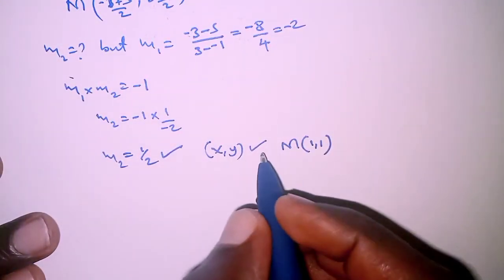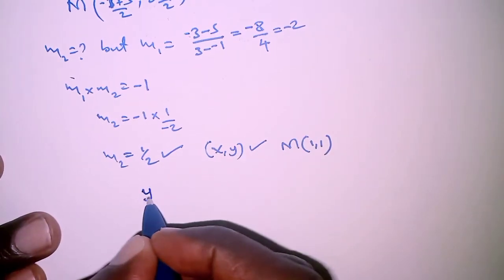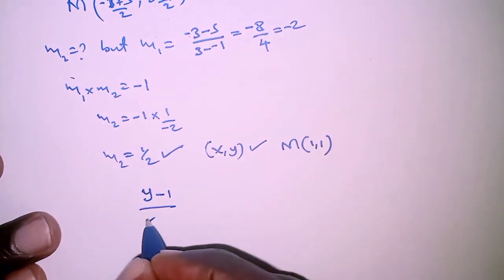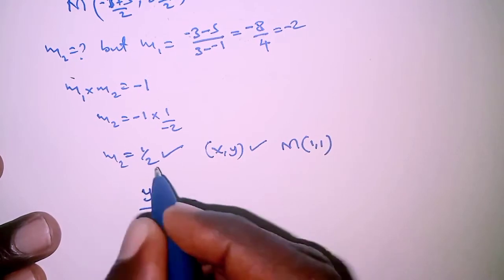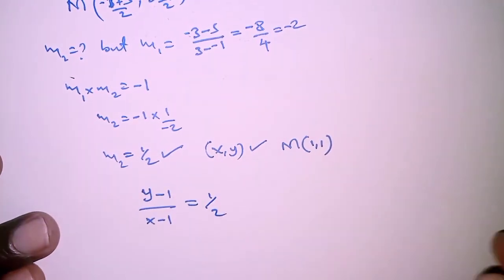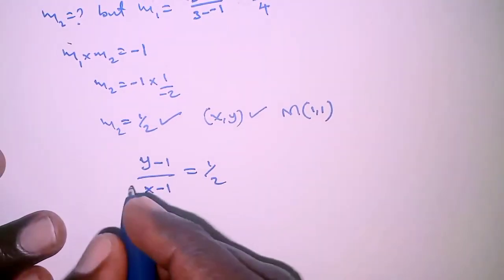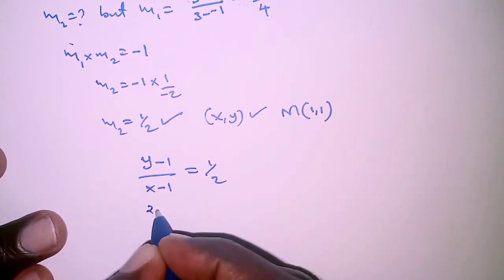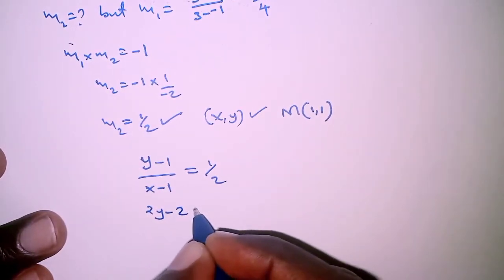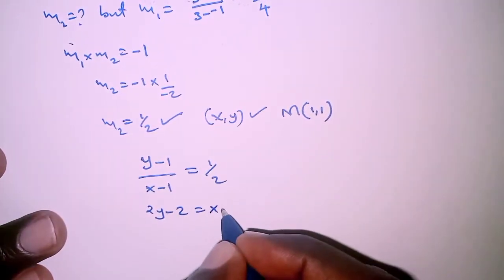So we have change in y over change in x: (y - 1)/(x - 1), and that should be equivalent to 1/2. Cross multiplying we will have 2y - 2 = x - 1.